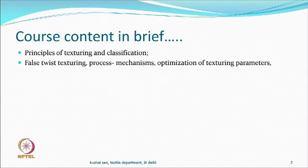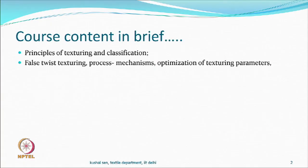One of the interesting technologies which is quite popular is called the false twist process. What it means is that you actually twist, but finally there is no twist, and therefore it is called false twist. This is one process that we would like to talk about. We will talk about mechanisms related to this texturing process, properties, structure-property correlation, process parameters, and so on.